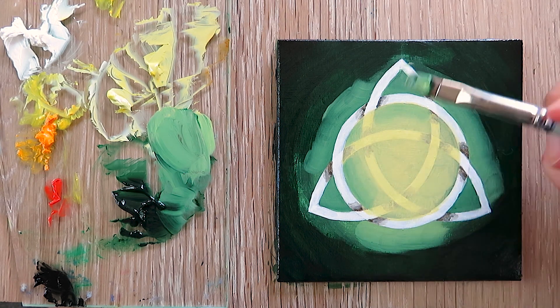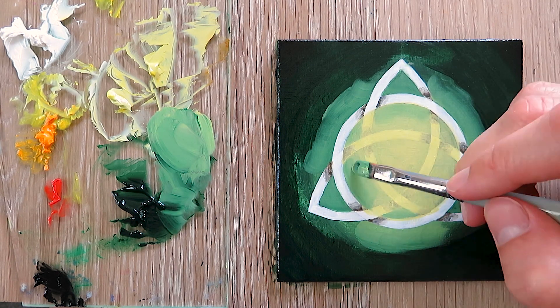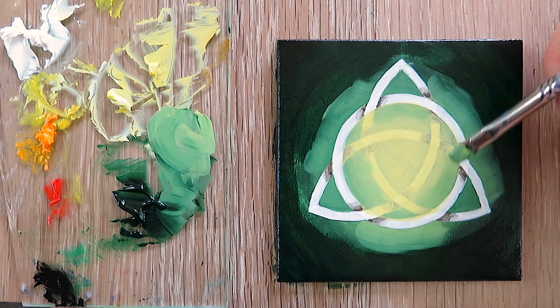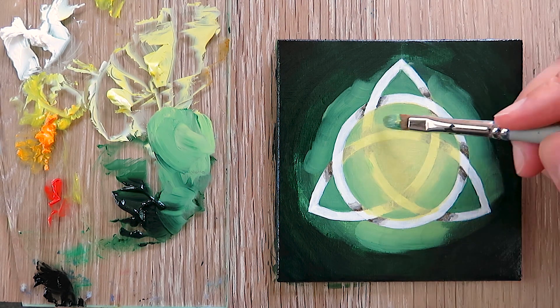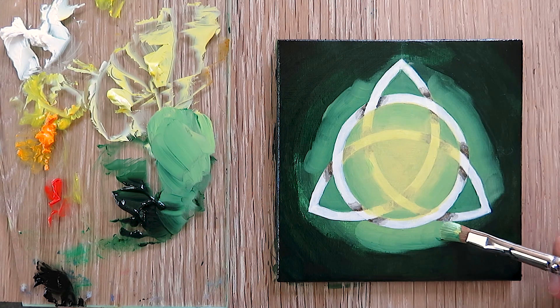We do the same inside the circle. We paint the edges with this mid-tone green color and blend it nicely, but make sure that the very center of the circle, like this triangle, remains bright.